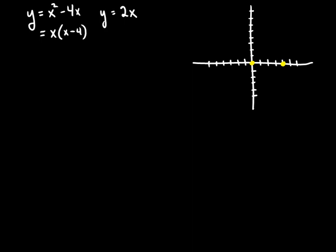The vertex will be halfway between the zeros, which is at x equals 2. You can plug in those values and you'll get y equals negative 4.